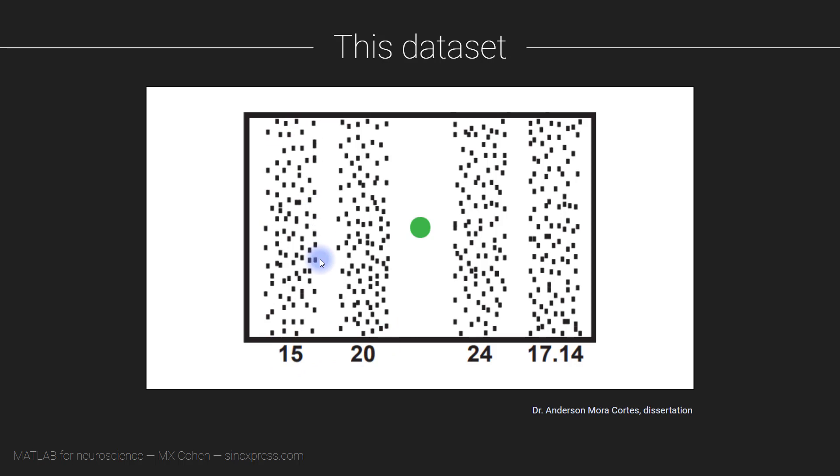So the flicker was uniform within each column indicated by the number below. So all the dots in this column were flickering uniformly at 15 hertz. These dots were flickering at 20 hertz, 24 hertz, and 17.14 hertz. They look like a strange set of numbers here, but it was constrained by the monitor sampling rate.